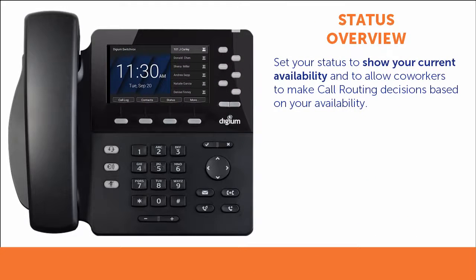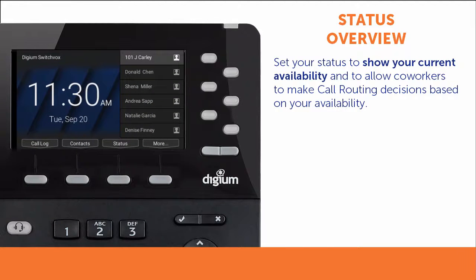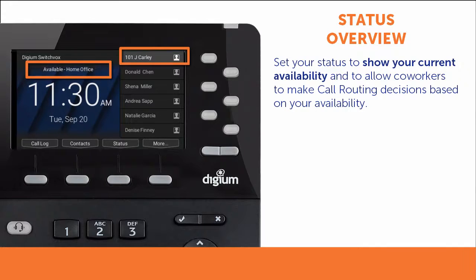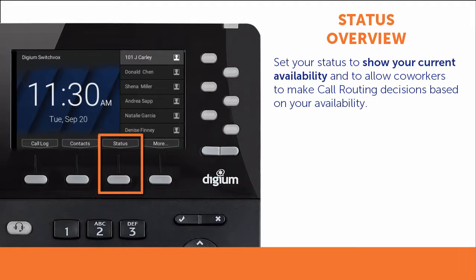You can set your phone to show your current status — for instance, whether you are available to take a call, in a meeting, working from home, or even away on vacation. Setting your status allows coworkers to make call routing decisions based on your availability.